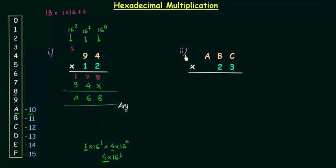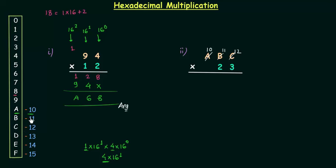Now we will move to problem number 2, which has more calculations compared to the first problem. The first hexadecimal number is A, B, C and the second hexadecimal number is 2, 3, and we have to multiply them. I will repeat the same procedure — first multiply A, B, C by 3, then multiply A, B, C by 2. C is nothing but 12, B is nothing but 11, and A is 10.